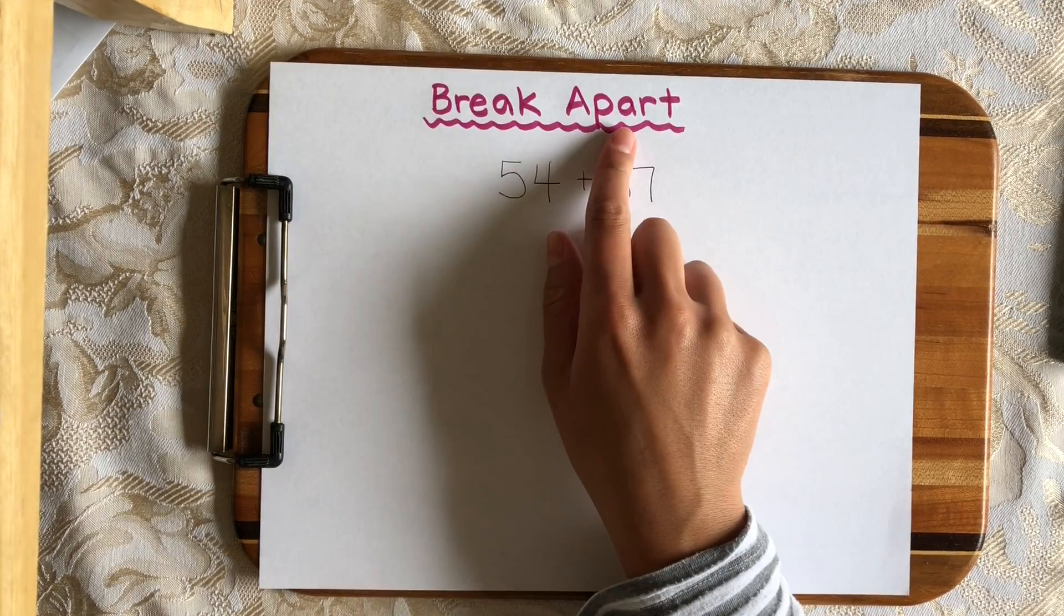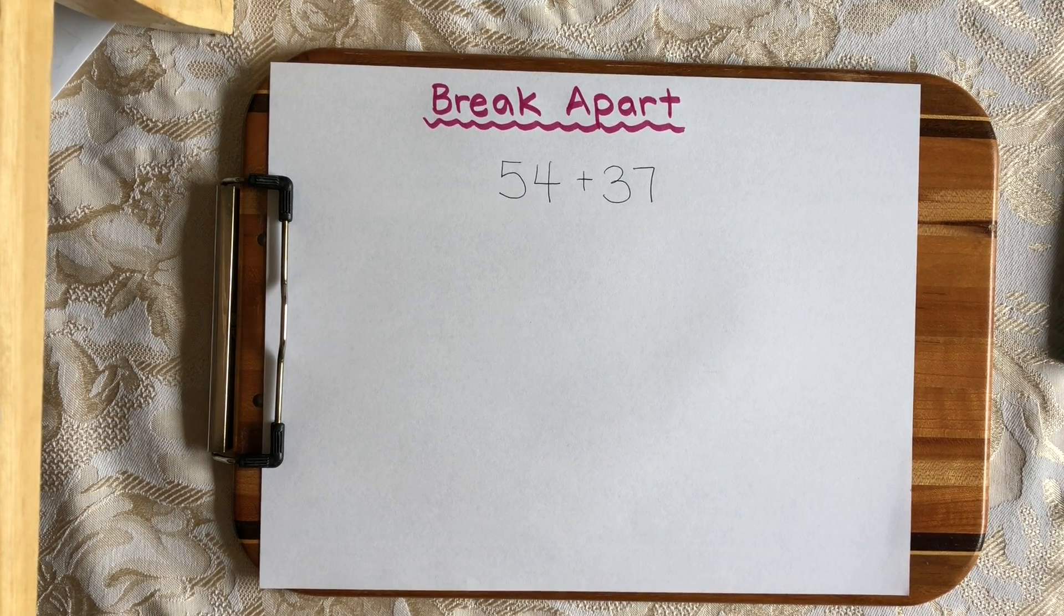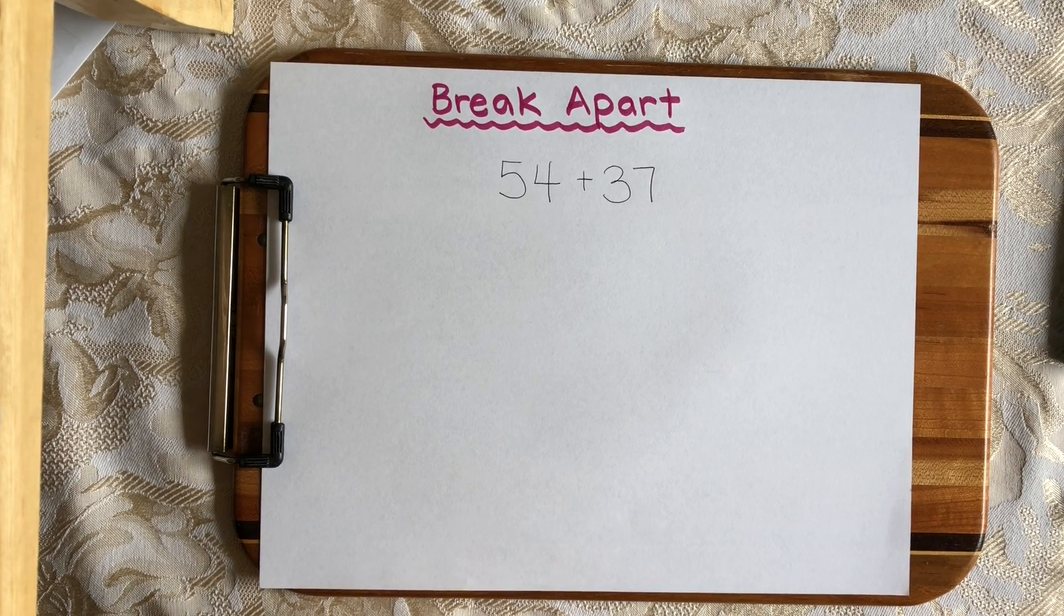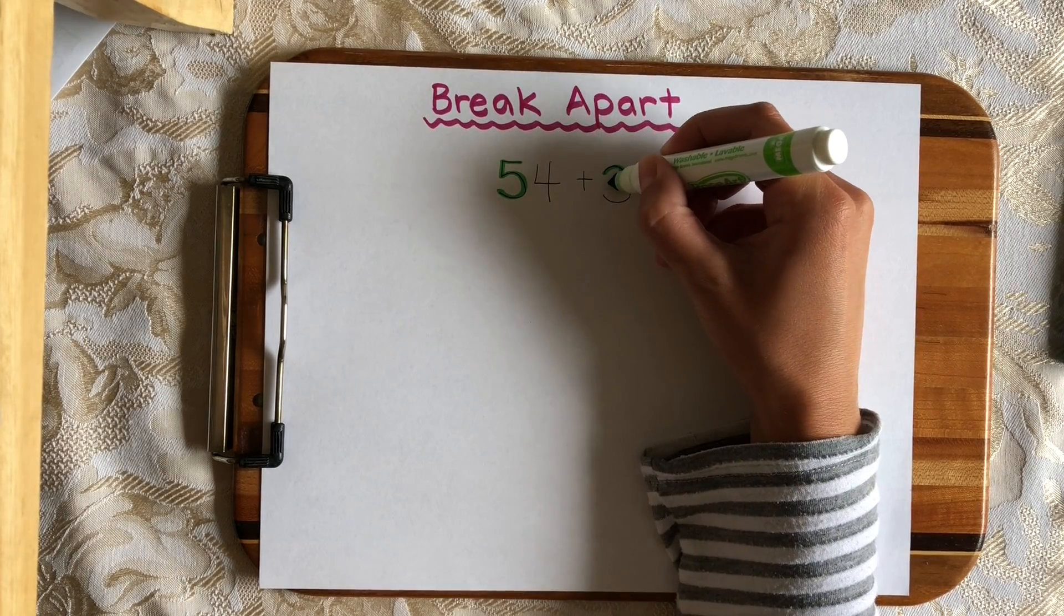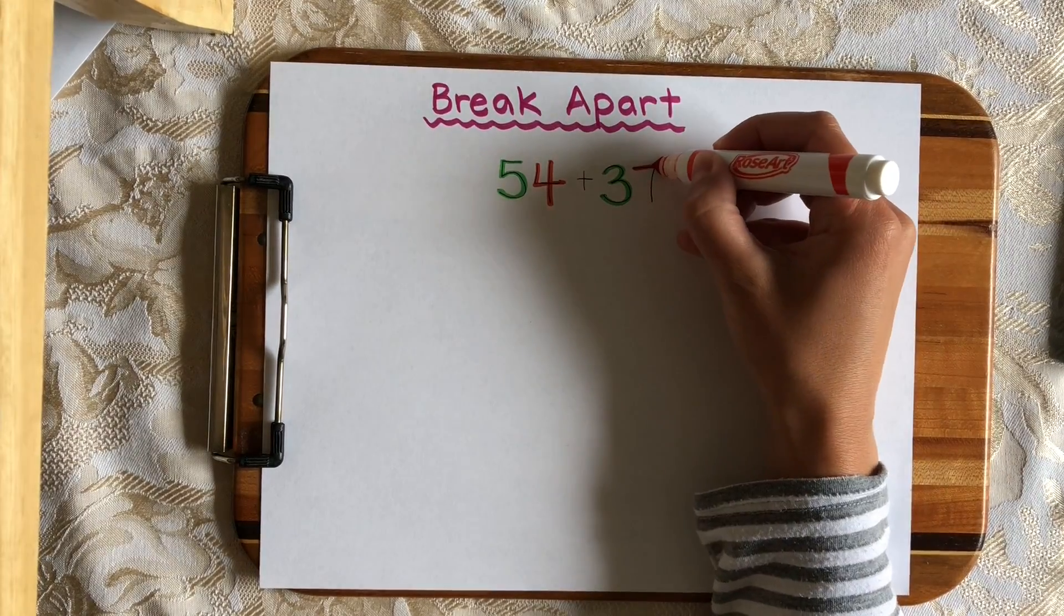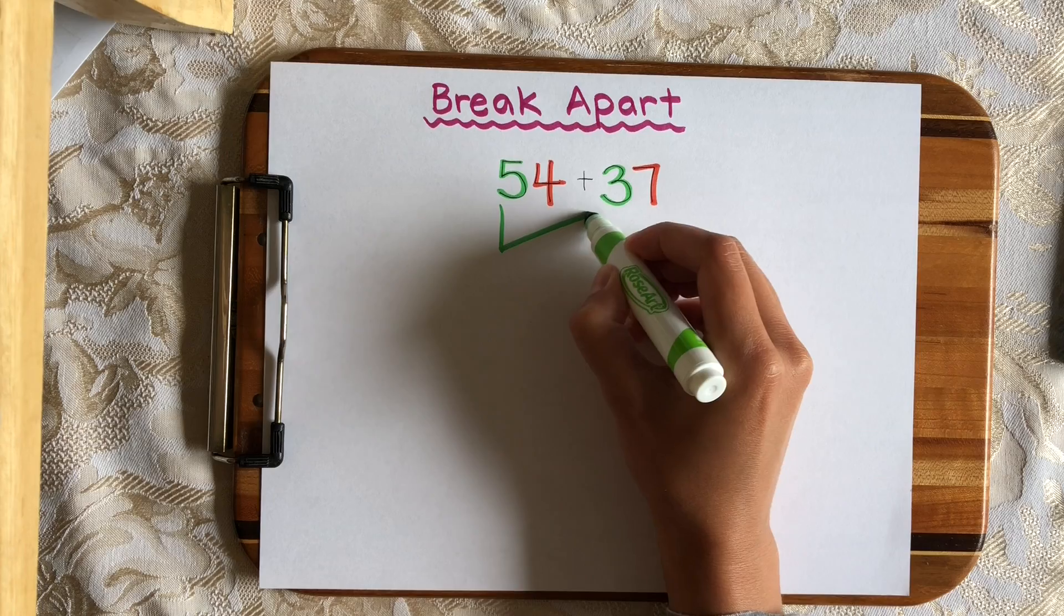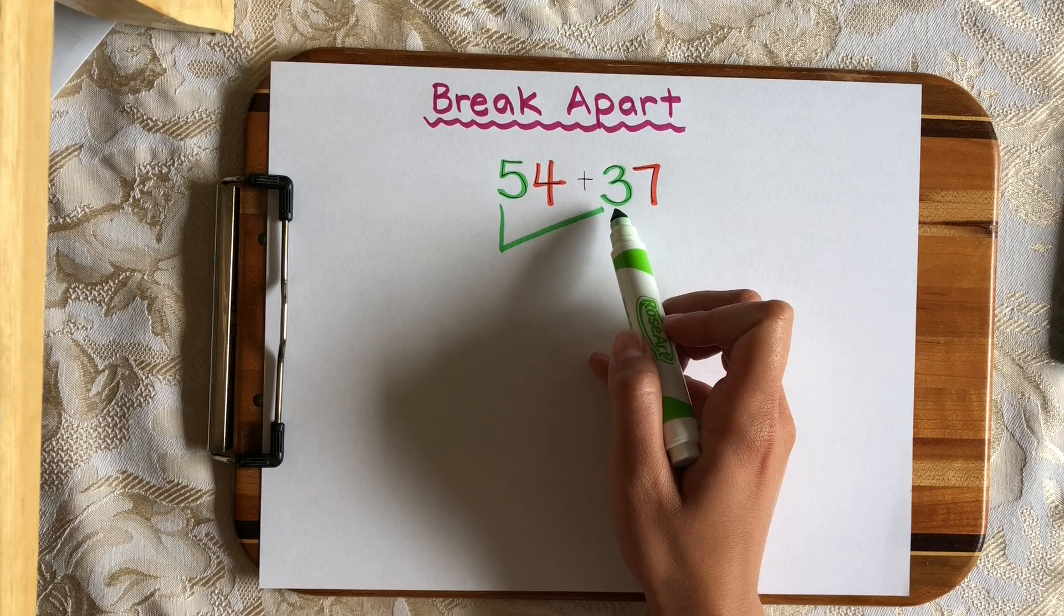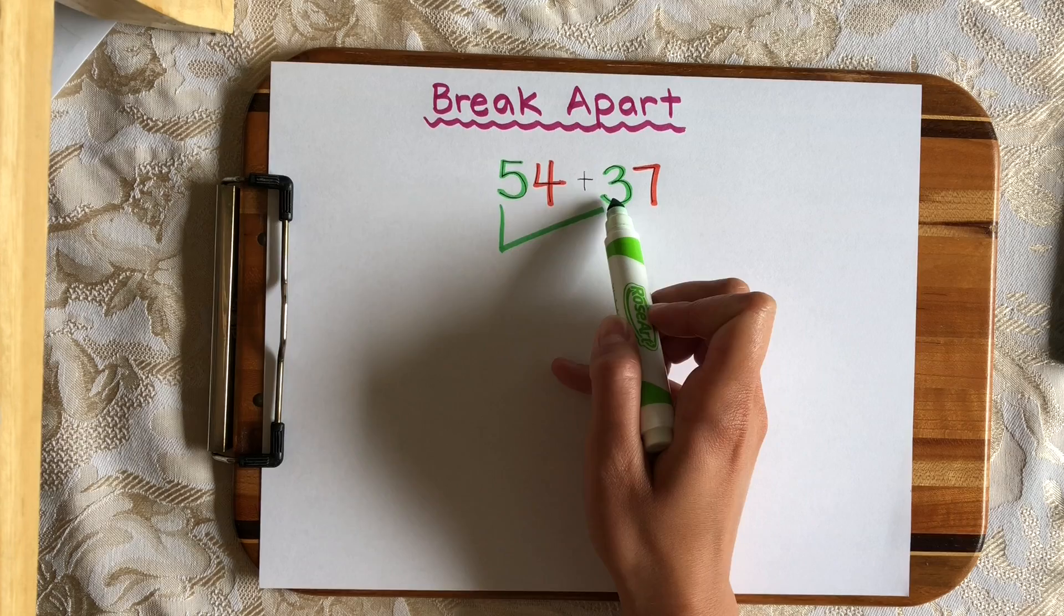This strategy is called the break apart strategy. So let's solve 54 plus 37 using the break apart strategy. In this strategy, we're going to separate the numbers into the tens and ones. So I'm going to highlight the tens with green in both numbers and the ones with red in both numbers. So let's add first the tens. That's 5 and 3. But remember, these are digits 5 and 3, and they are actually representing tens. So 5 tens and 3 tens, which is 50 plus 30.